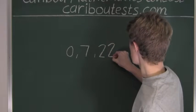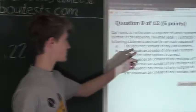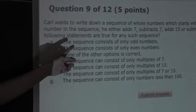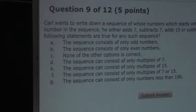And now we know 22 ends in 2, so therefore it is an even number. And option A says it consists of only odd numbers. So therefore that must be wrong because we already have an even number.